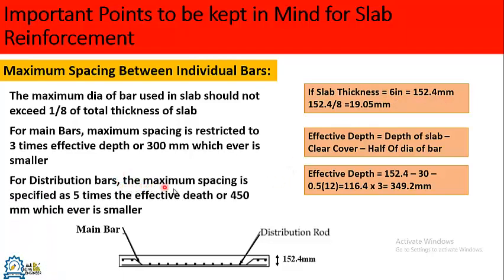For distribution bars, the maximum spacing is specified as 5 times the effective depth. Using the same effective depth of 116.4 mm and multiplying by 5, we can calculate the maximum spacing for distribution bars. Note that the diameter of distribution bars is comparatively less than that of main bars, so the effective depth may vary accordingly.